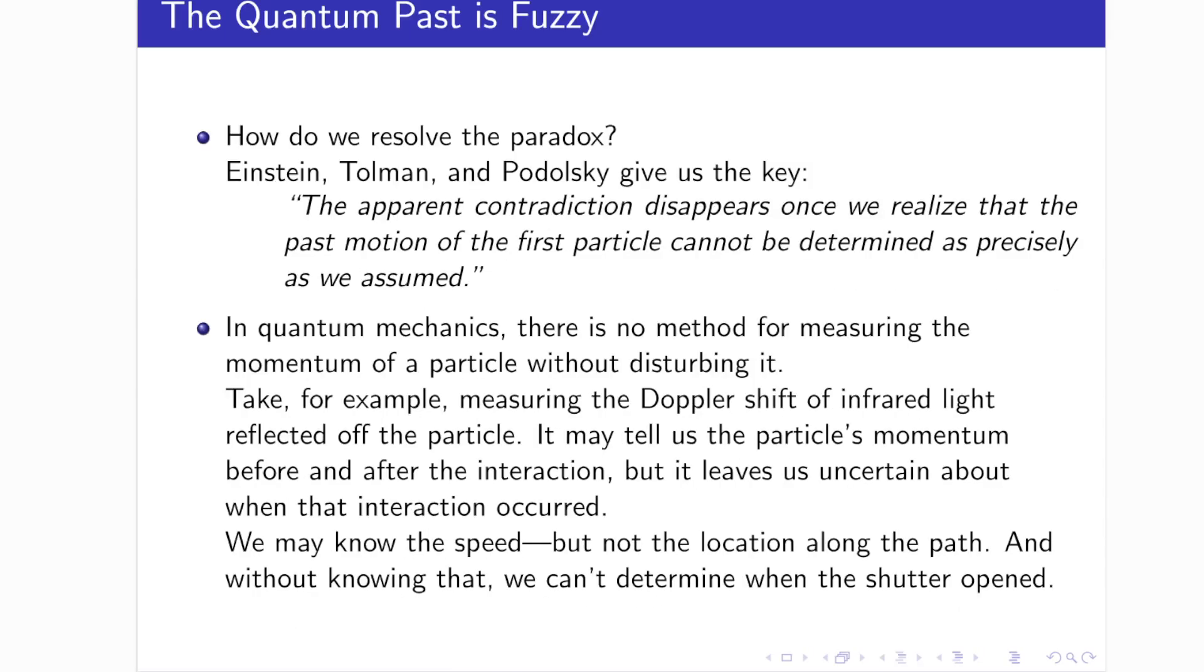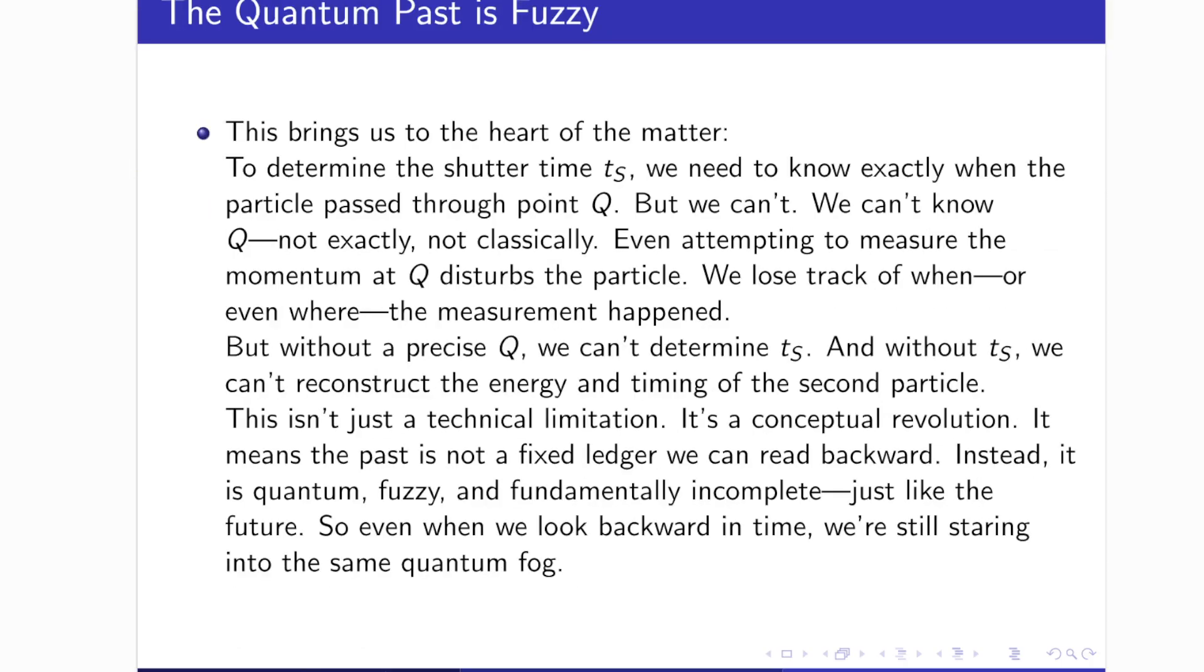This leads us to the true core of the paradox. To determine the shutter time, what we've been calling T sub s, we need to know precisely when the particle passed through a specific point along its path. A point we called Q. But here's the problem. We can't know Q. Not exactly. Not classically. Even the act of measuring the momentum at Q disturbs the particle. And that disturbance erases our ability to say when or even where that measurement happened. Without knowing Q, we can't determine T sub s. And without T sub s, we cannot reconstruct the energy or the arrival time of the second particle.